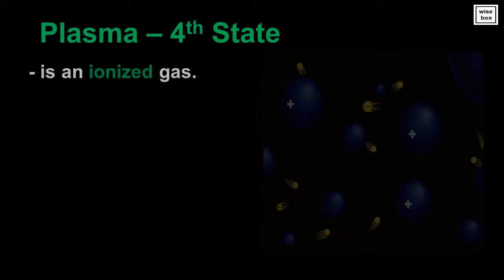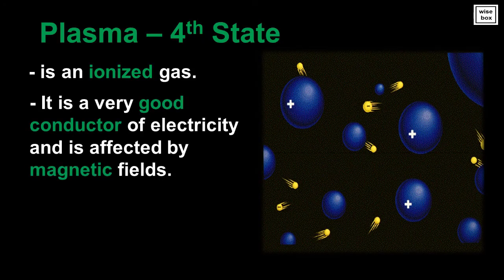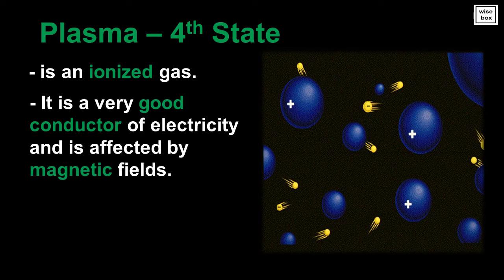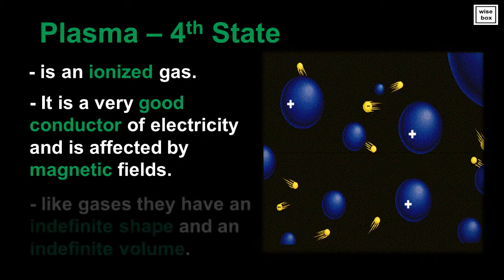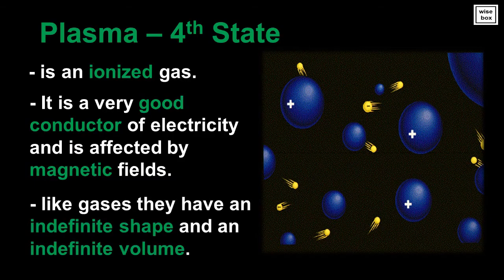Plasma, the fourth state of matter. It is a very good conductor of electricity and is affected by magnetic fields. Like gases, they have an indefinite shape and an indefinite volume.